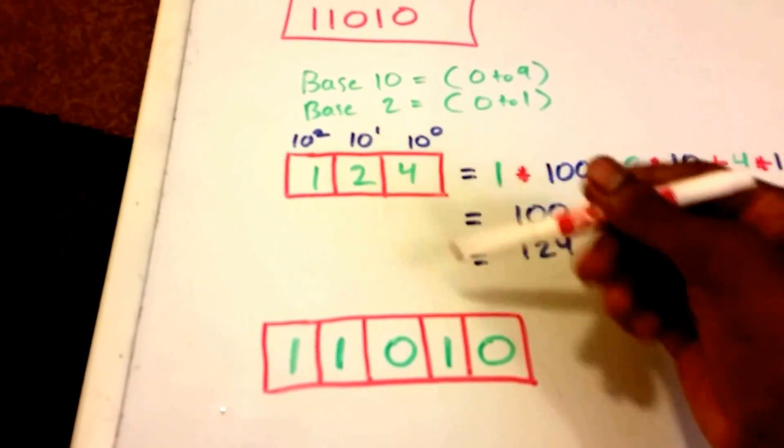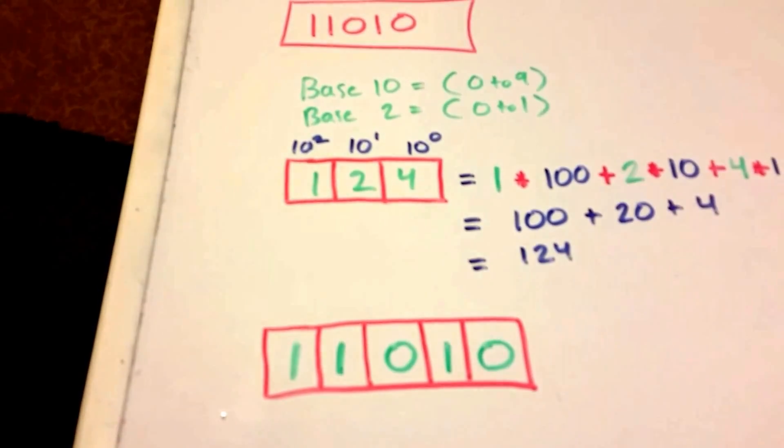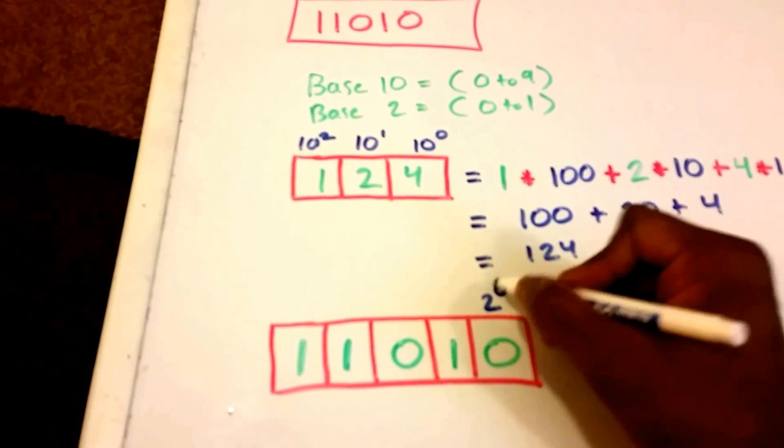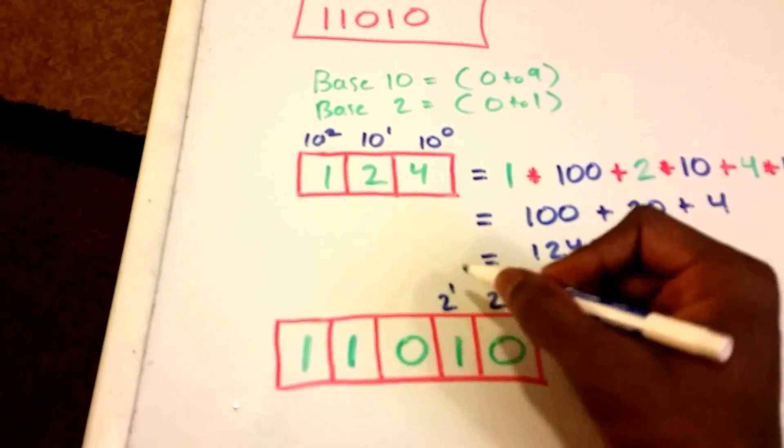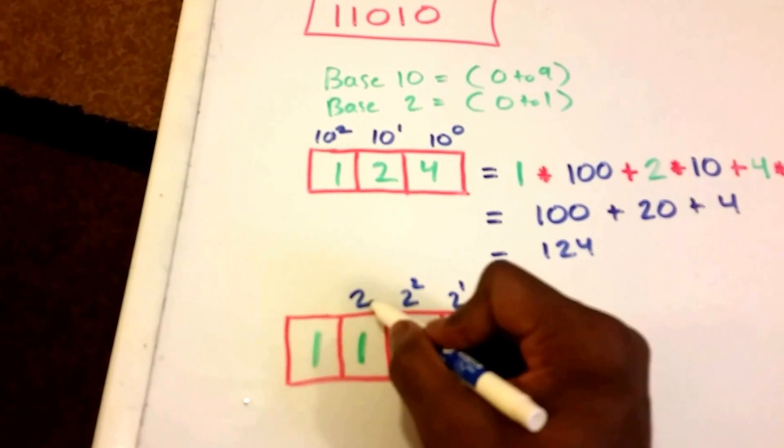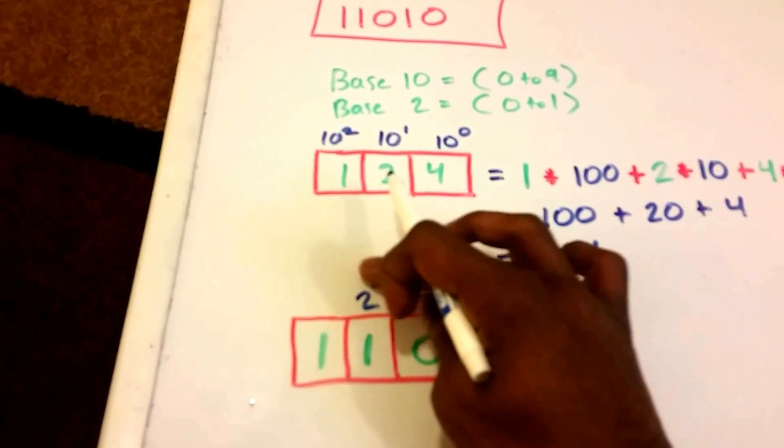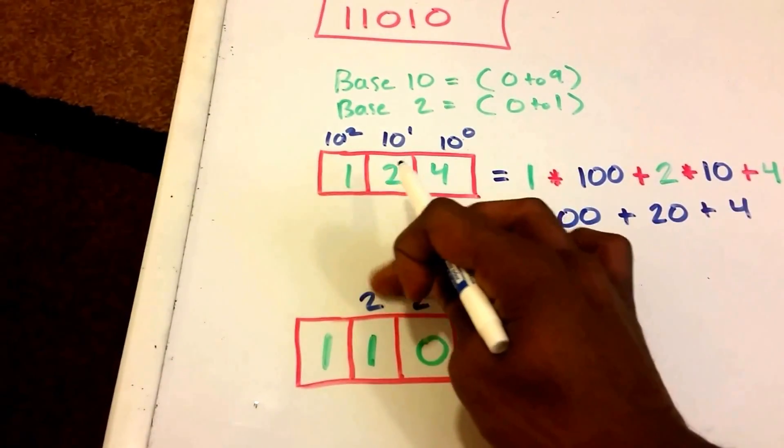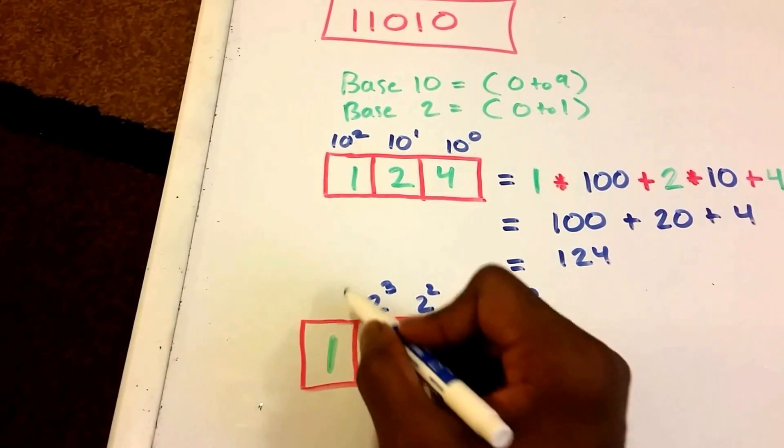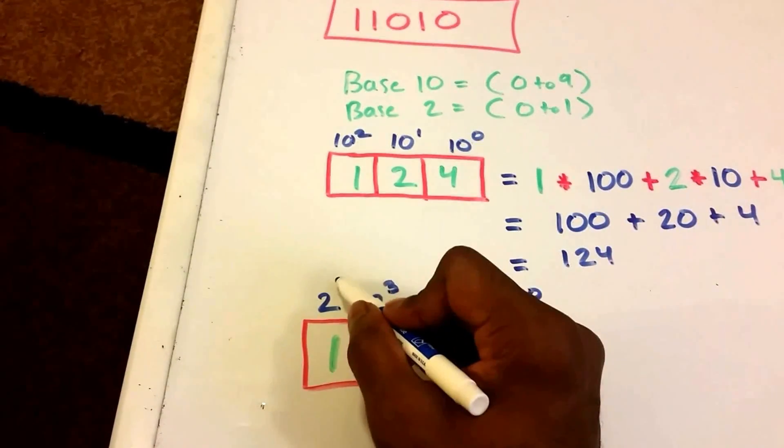So since this is powers of, or this is a base 2, we use powers of 2. So here, this is base 10, we use powers of 10. So this will be 2 to the 0, 2 to the 1, 2 to the 2, 2 to the 3, and then here is 2 to the power of 4.